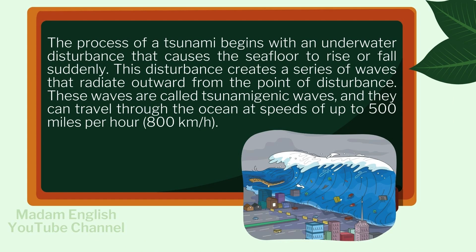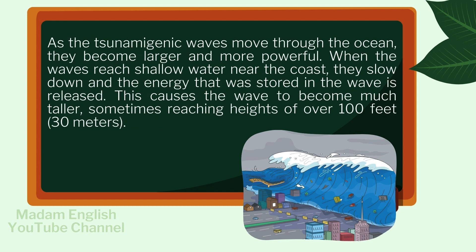The process of a tsunami begins with an underwater disturbance that causes the seafloor to rise or fall suddenly. This disturbance creates a series of waves that radiate outward from the point of disturbance. These waves are called tsunamogenic waves, and they can travel through the ocean at speeds of up to 500 miles per hour, or 800 kilometers per hour. As the tsunamogenic waves move through the ocean, they become larger and more powerful. When the waves reach shallow water near the coast, they slow down and the energy stored in the wave is released.